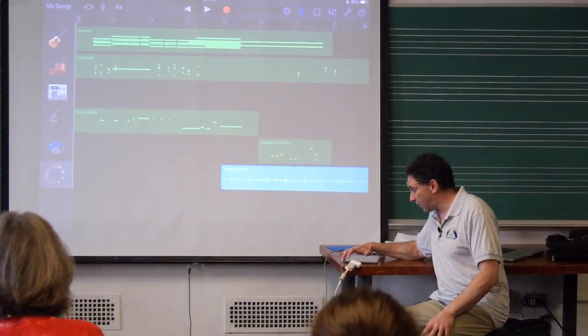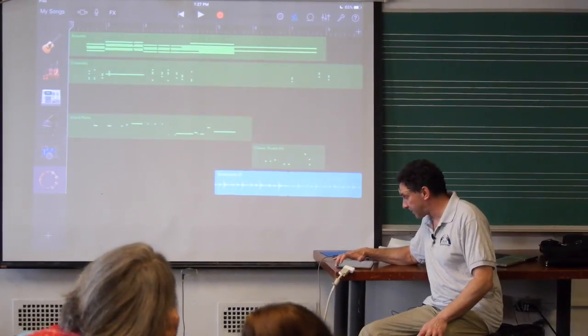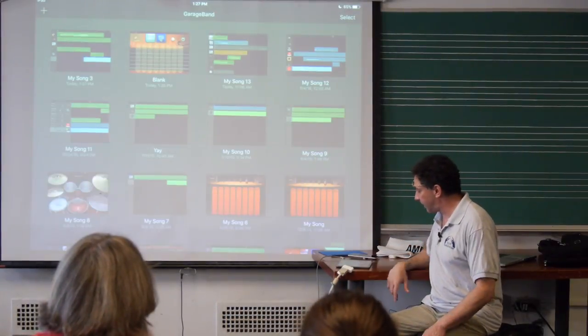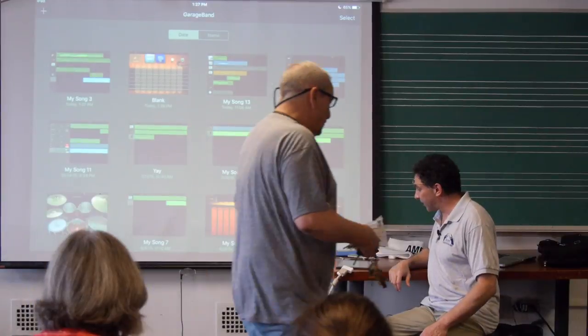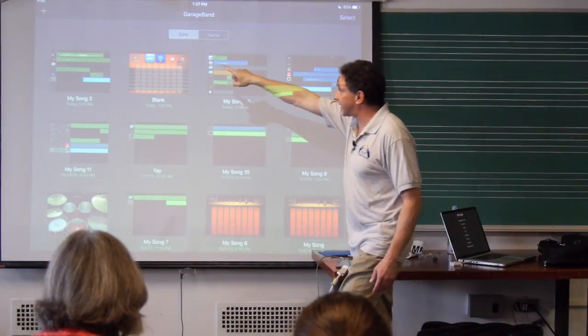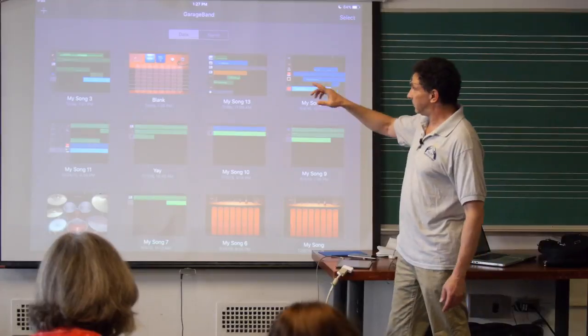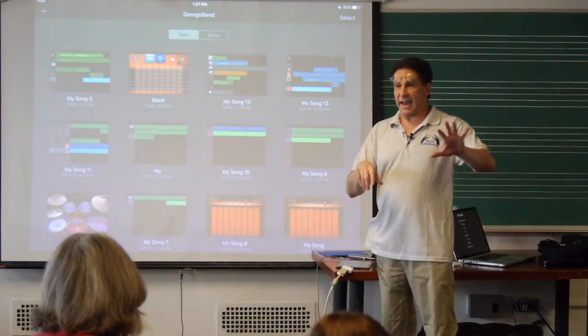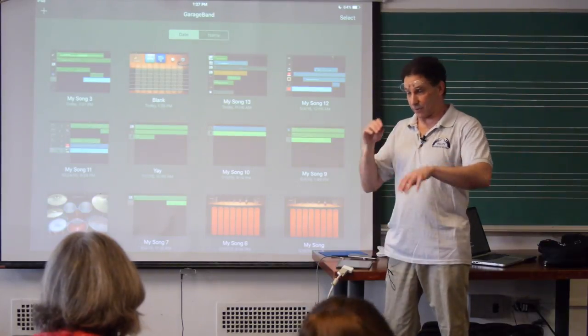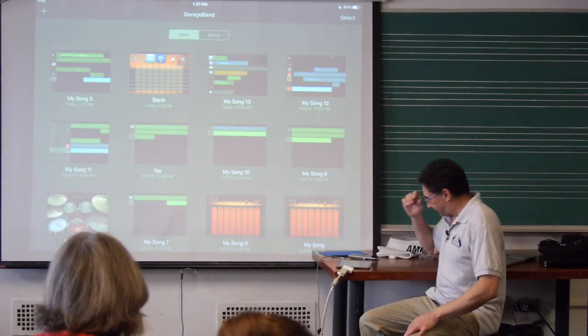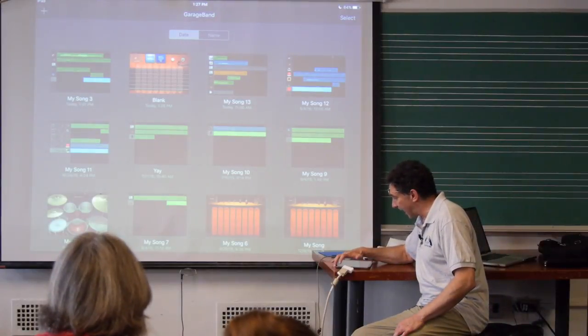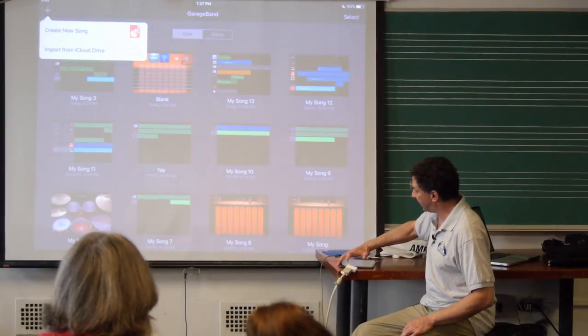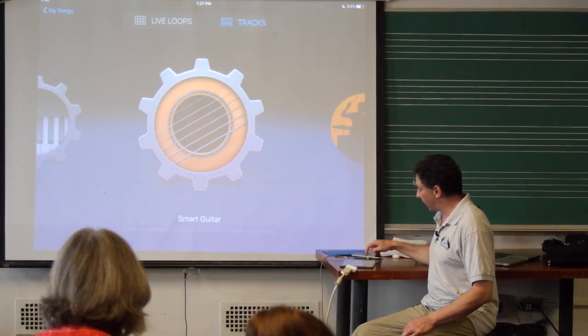If I tap on My Songs, that's how I get to the main library of all the songs. The plus sign means that you can start a new song. When you tap the plus sign, you'll go into the area where the first thing they prompt you to do is select an instrument. Actually, I'll do that now with you guys. I'm gonna press the plus sign. I'm gonna ask to create a new song. And there we go. Instruments.